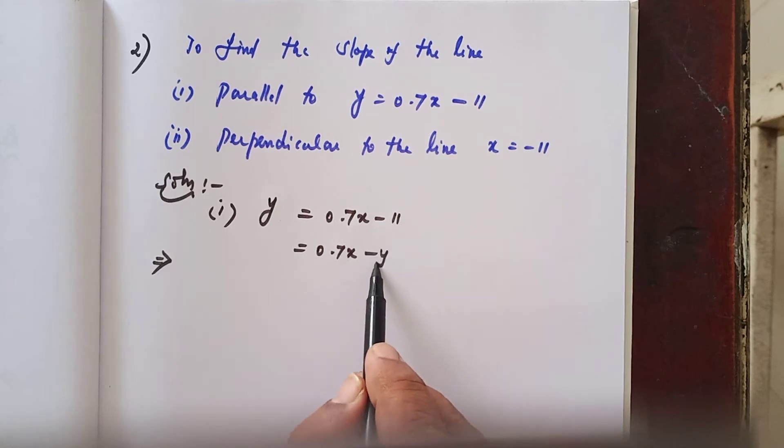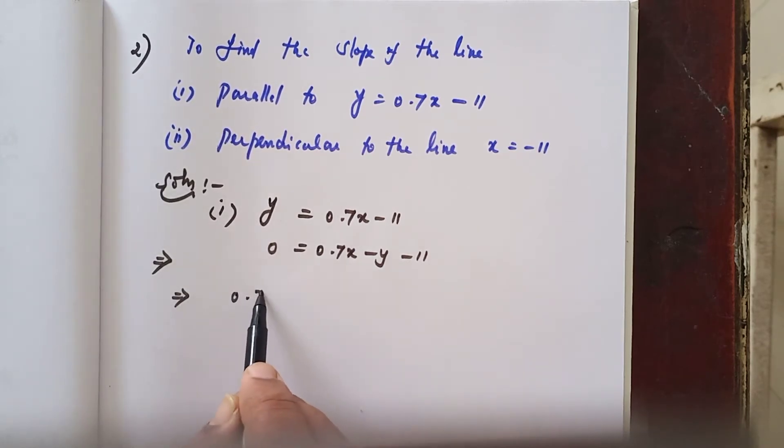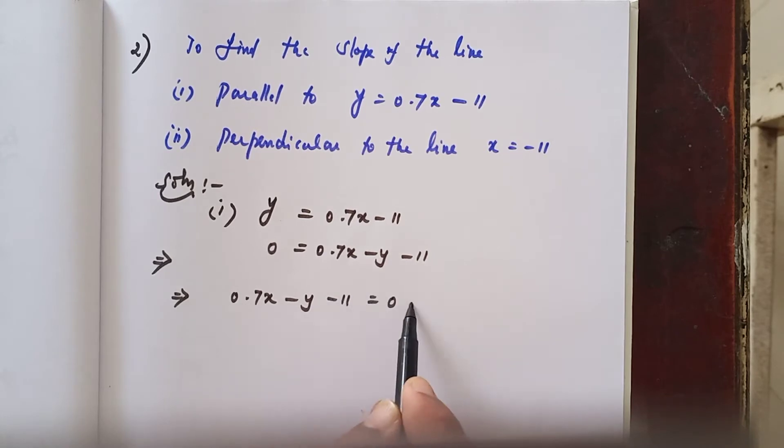Plus y comes right hand side minus y and the constant minus 11, nothing in left hand side 0. So, which implies I write 0.7x minus y minus 11 equals 0.